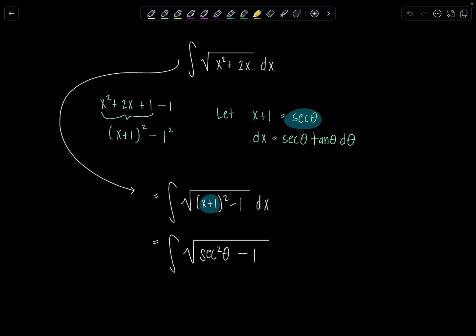And then instead of dx, what do we have? All this loveliness right here. Secant theta, tan theta, d theta. Okay, perfect.